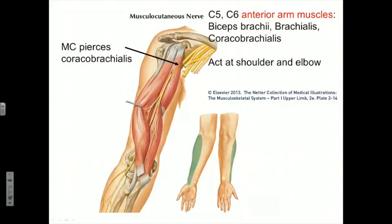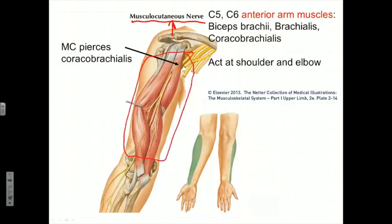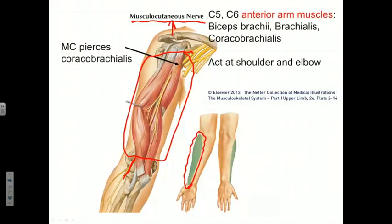Equally important, particularly with regard to clinical anatomy, is their cutaneous distribution. Looking first at the musculocutaneous nerve — one of the reasons this nerve gets its name is because it innervates the three muscles in the anterior aspect of the arm, but then the musculocutaneous nerve becomes cutaneous and innervates skin shown in green on the lateral aspect of the forearm. If one had a lesion or injury of the musculocutaneous nerve, it would weaken anterior arm muscles and cause altered sensation, numbness, tingling, or pain, or even loss of sensation on the lateral aspect of the forearm.